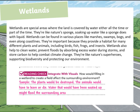They're important because they provide a habitat for many different plants and animals, including birds, fish, frogs, and insects. Wetlands also help to clean water, prevent floods by absorbing excess water during storms, and store carbon to help combat climate change. They're like natural superheroes supporting biodiversity and protecting our environment.